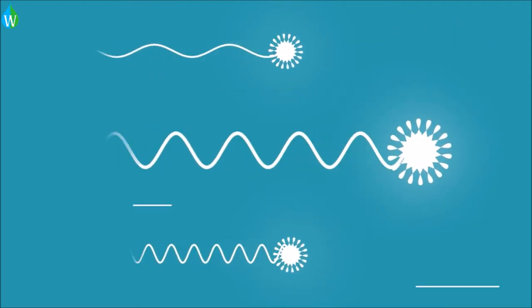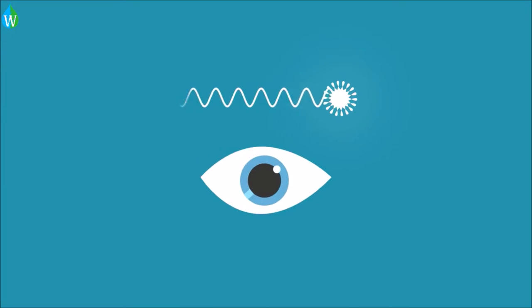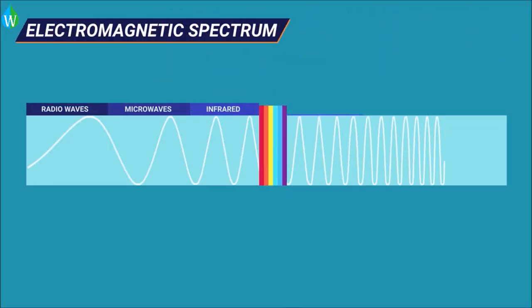You may already know more about it than you might think: radio waves, microwaves, but also the light visible to the human eye—that's all electromagnetic radiation, which can be categorized in the electromagnetic spectrum.